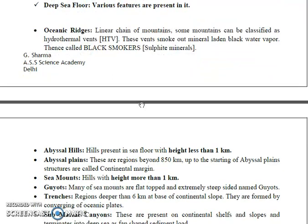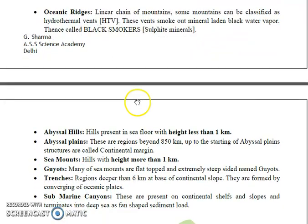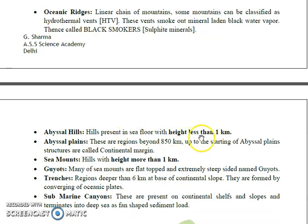The second feature of the deep sea floor is abyssal hills. These are hills present on the seafloor with a height of less than 1 km.